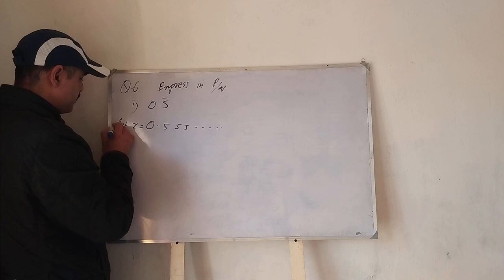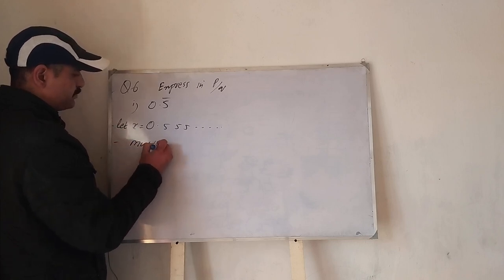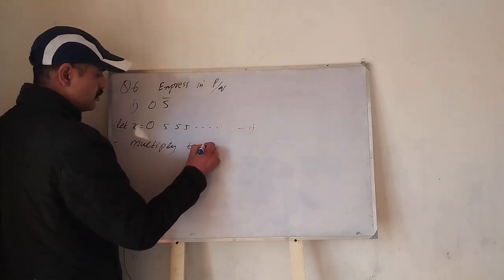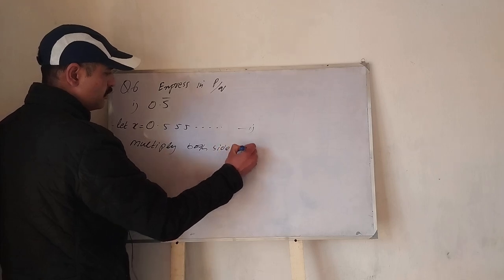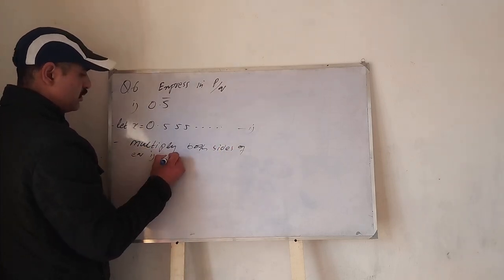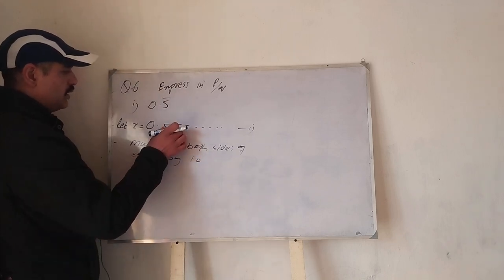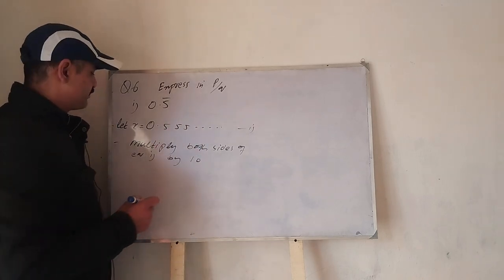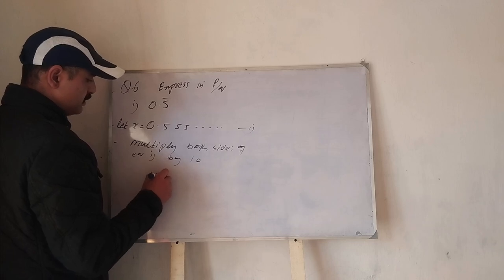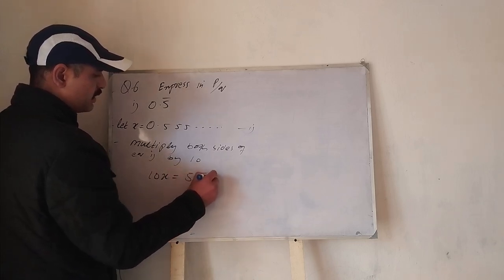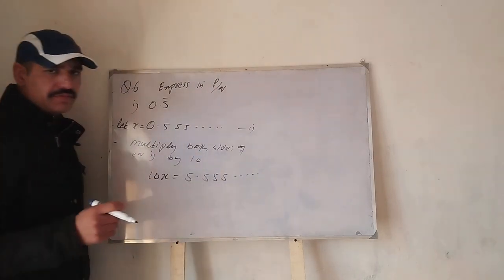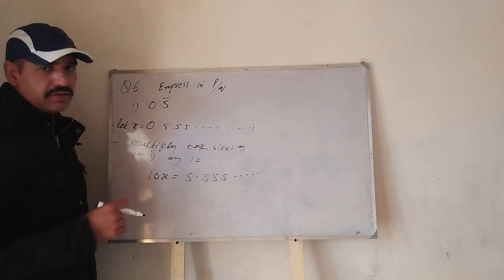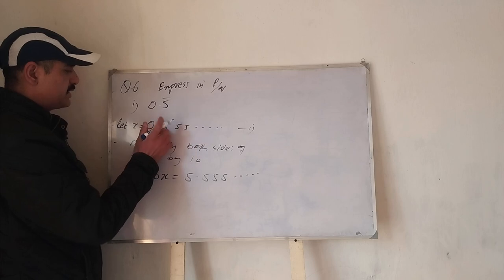Now, next step: multiply. This is equation 1. Both sides of equation 1 by 10. Equation 1 ke dono sides ko hum 10 se multiply karenge, so 10x is equal to 5.555 and so on. Jaise hi hum equation 1 ko 10 se multiply karenge, yeh left side 10x ho jayega.